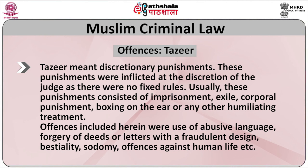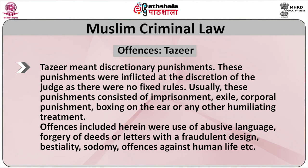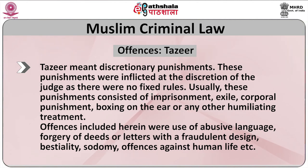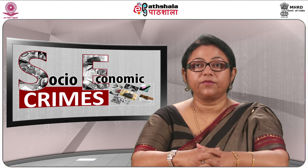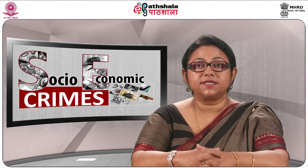The fourth category, Tazir, meant discretionary punishments. These punishments were inflicted at the discretion of the judge as there were no fixed rules. Usually these punishments consisted of imprisonment, exile, corporal punishment, boxing on the ear, or any other humiliating treatment. Offenses included herein were use of abusive language, forgery of deeds or letters with a fraudulent design, bestiality, sodomy, and offenses against life.